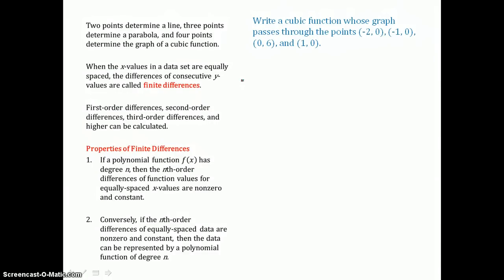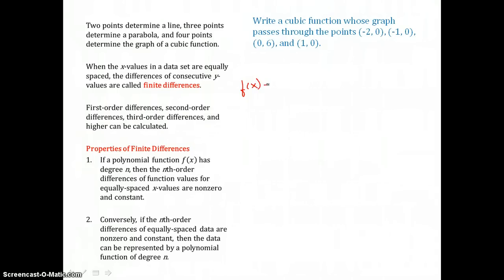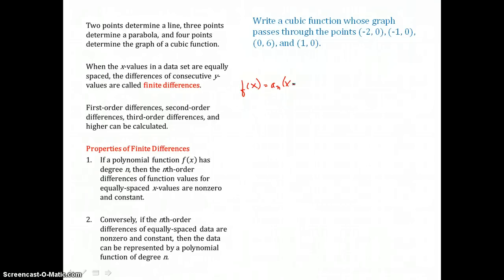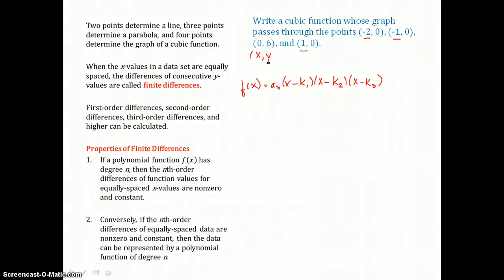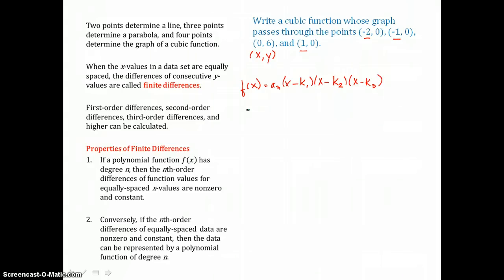In standard form, that cubic function is going to look like this: f of x is equal to a sub n times x minus k sub 1, times x minus k sub 2, times x minus k sub 3. Those k values are just x-intercepts or zeros for this cubic function, and they give us those three x-intercepts. They also give us an x and a y value, so we substitute in these values and solve for a sub n so that we can write our function.